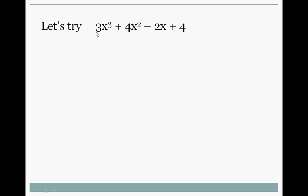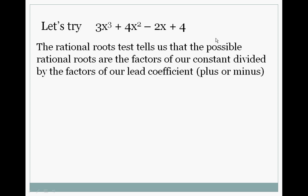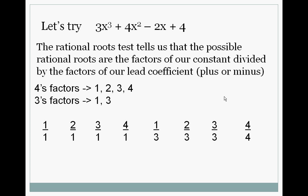Okay let's try another one. 3x³+4x²-2x+4. And we know that the possible rational roots are the factors of 4: 1, 2, 4 over 1 and 3 and then the negation of all those. So we have quite a few this time.